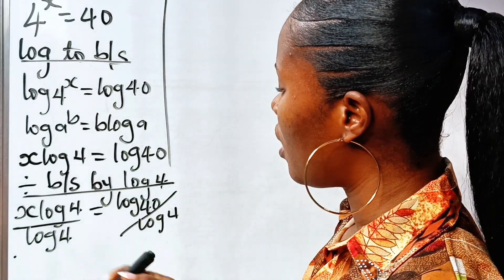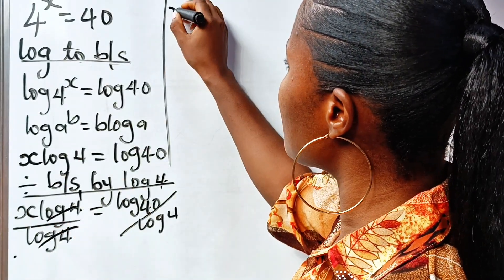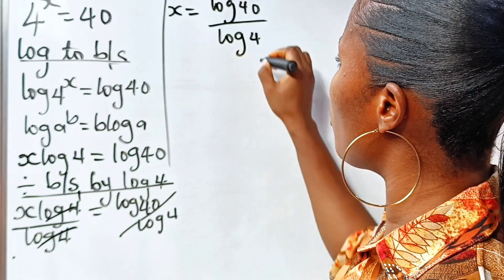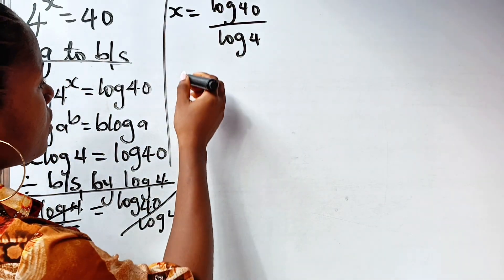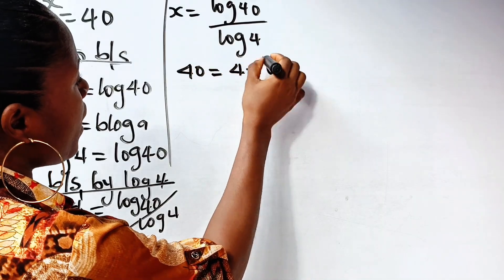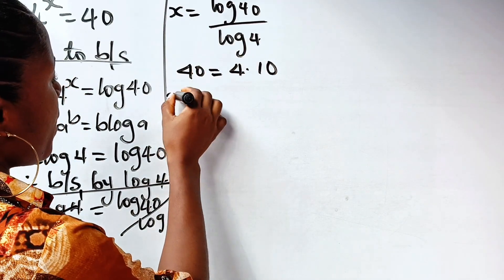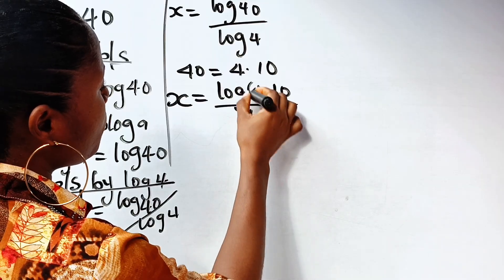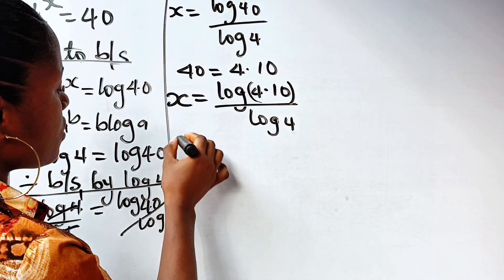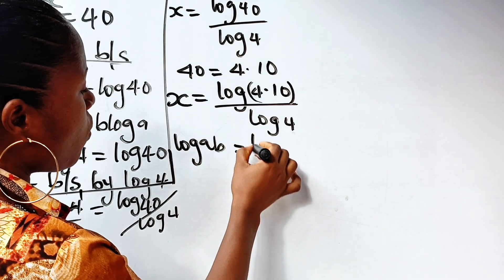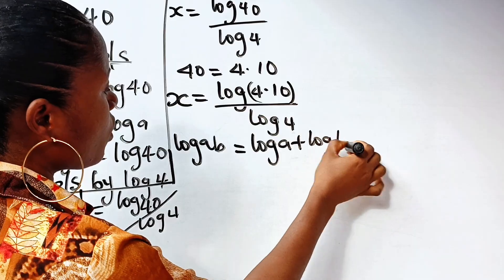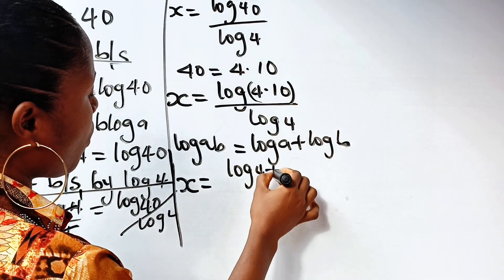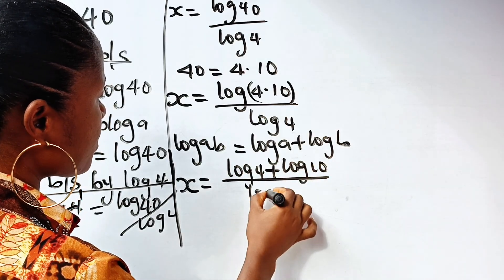Now let's continue. Log 4 divides itself, we have 1. So 1 times x is x, which is equal to log 40 divided by log 4. Now, I want you to note that 40 is equal to 4 multiplied by 10, so we write x is equal to log(4 × 10) divided by log 4. But log(a × b) is equal to log a plus log b, so we write x is equal to log 4 plus log 10, divided by log 4.